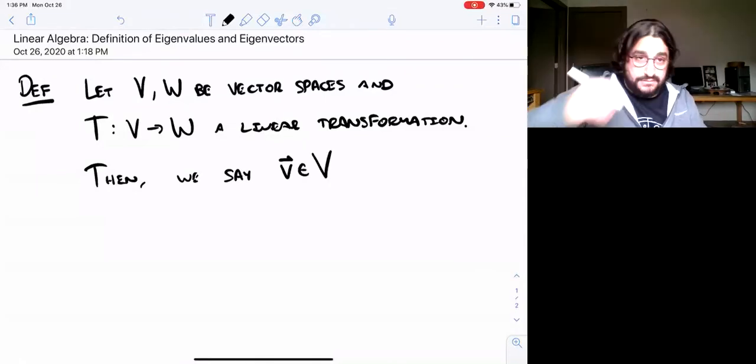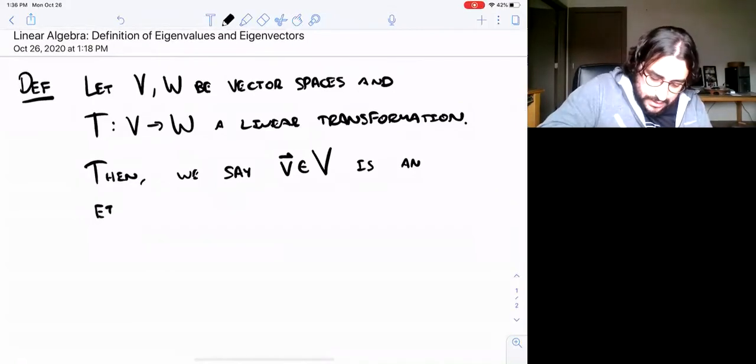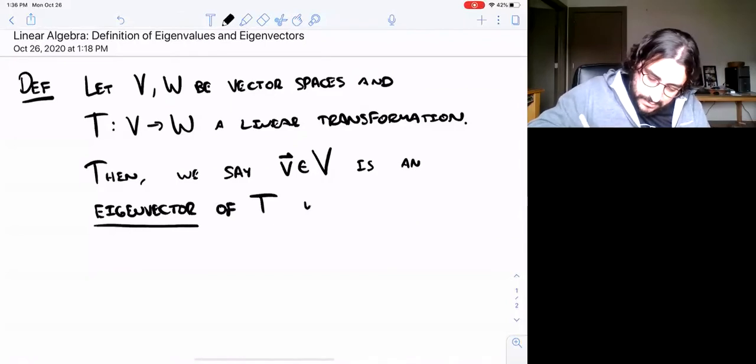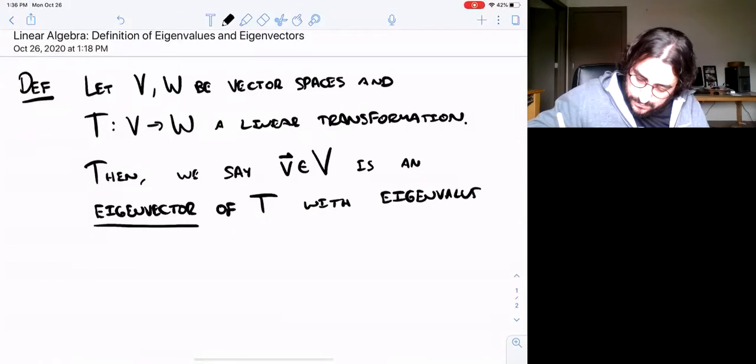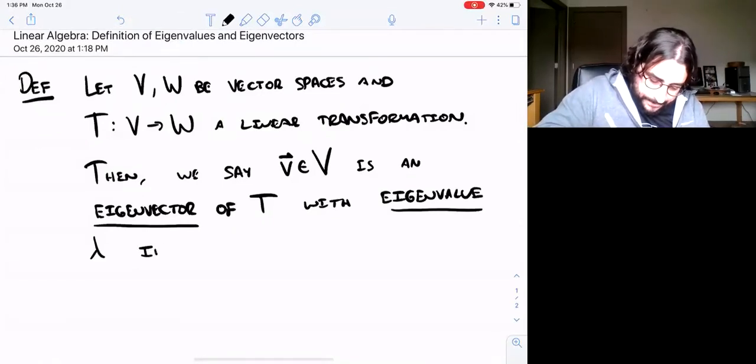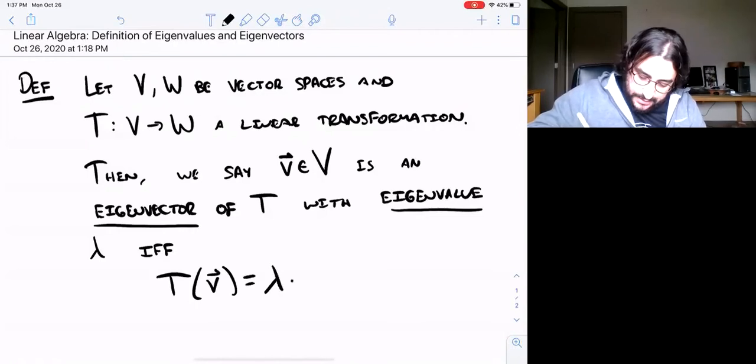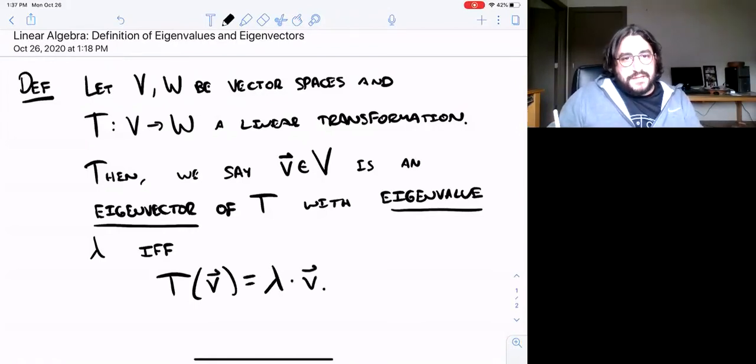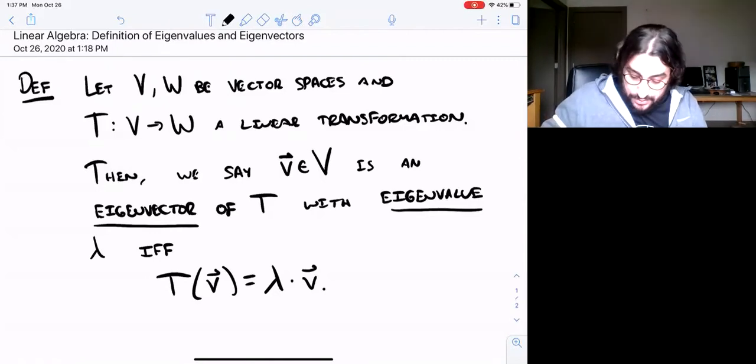A vector v in the input space, in the domain of T, is an eigenvector of T with eigenvalue lambda if and only if the following equation holds: T(v) = λv. So this is the definition. Both terms are defined here, eigenvector and eigenvalue. You can't really define one without the other. Notice that it's a property of a particular linear transformation.